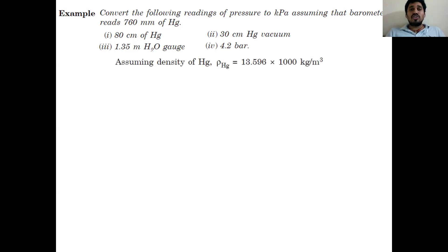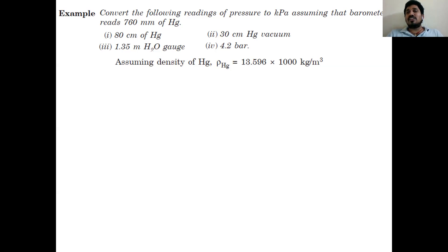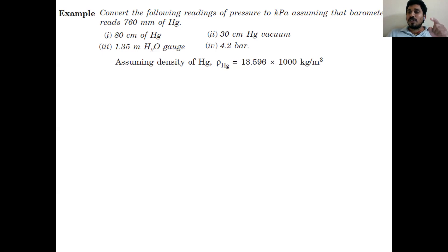One more data is given: the density of mercury is 13.596 × 10³ kg/m³, which is 13596 kg/m³. This data is actually not required for this problem since the density of mercury is always 13600 — the specific gravity of mercury is 13.6, multiplied by 1000. But here 13.596 is mentioned as specific gravity, so for this problem the density of mercury is taken as 13596 kg/m³.